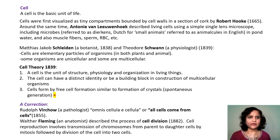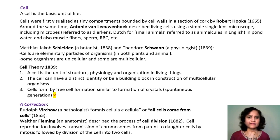Schleiden and Schwann were biologists — a botanist and a physiologist — who were studying plants and animals respectively. They defined cells as elementary particles of organisms in both plants and animals, and from their observations they concluded that some organisms are unicellular whereas others are multicellular.